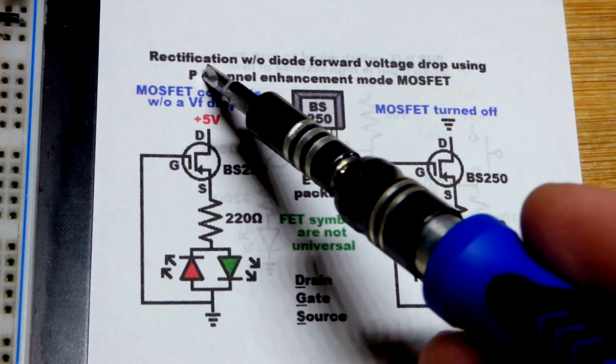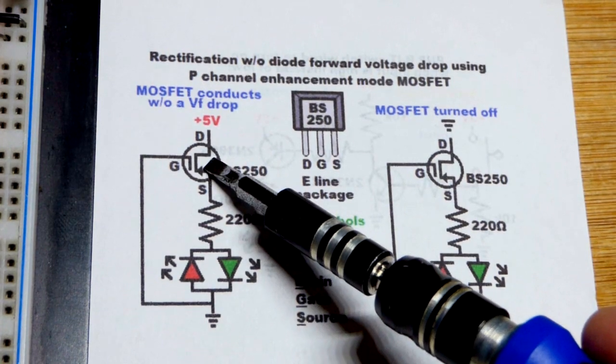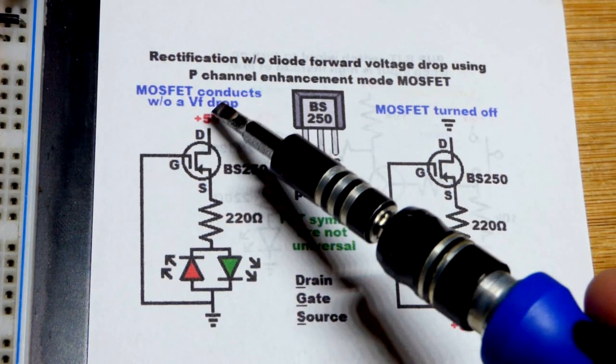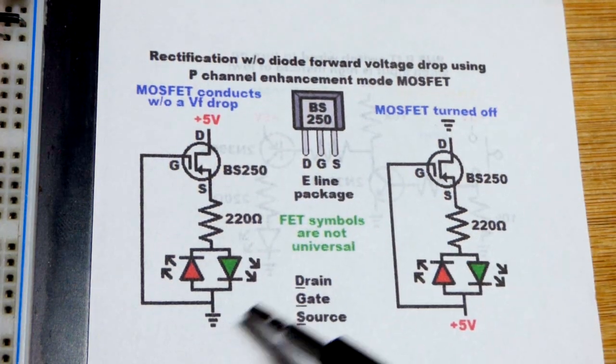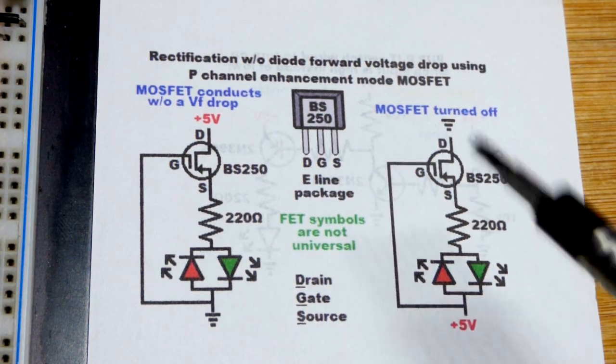So now in this video we're going to look at rectification. Basically that means we're going to use a transistor here like a diode where it will conduct one direction but not the other direction depending on which side of the power supply is on which side of the circuit. This could be reverse voltage protection right there.